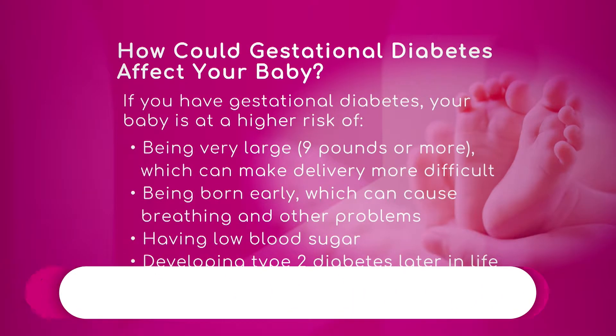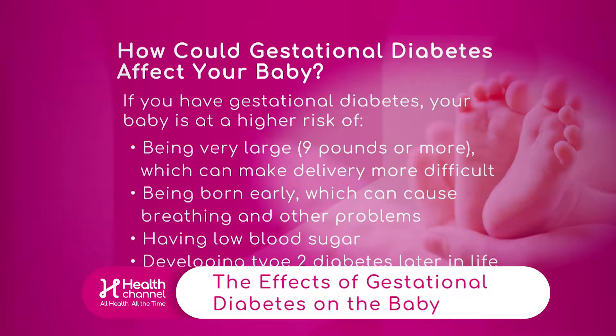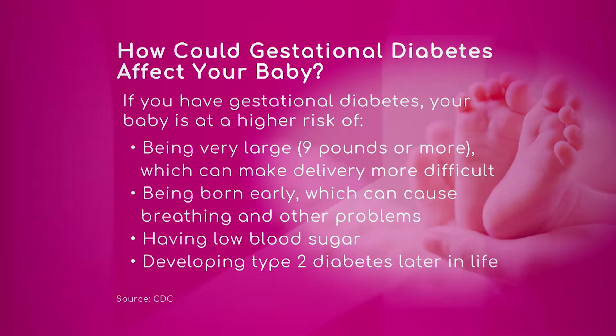Let's get to how gestational diabetes affects the baby. The baby can be very large, which can make delivery more difficult. Being born early can cause breathing and other problems, as well as having low blood sugar and developing type 2 diabetes later in life. A lot of people wouldn't think about things that happen before birth affecting you later on in life, but that's exactly why this is so important.